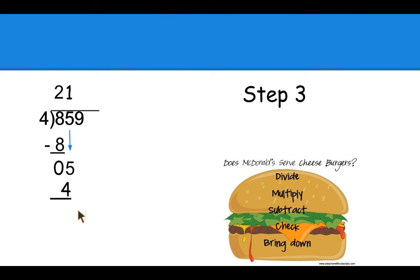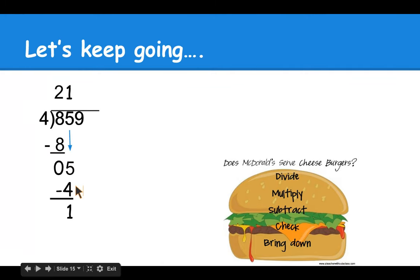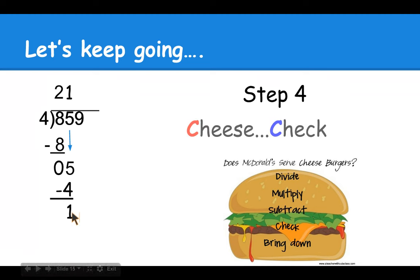Step three, S serve for subtract. Five minus four equals one. Okay, let's keep going. Step four, C does McDonald's serve cheese. Remember, we're going to check. Make sure when we subtract, our answer is smaller than our divisor.